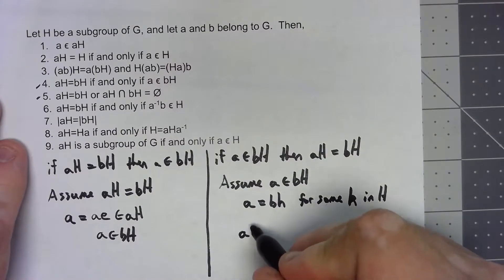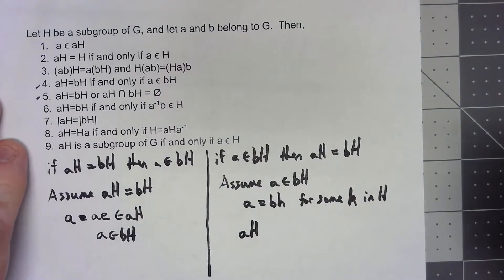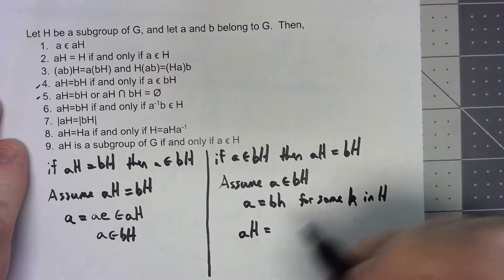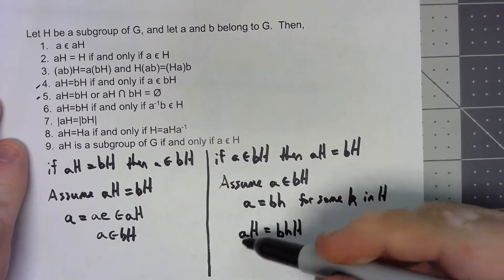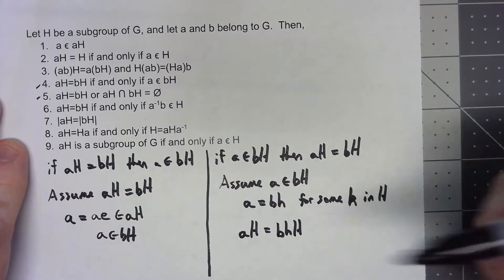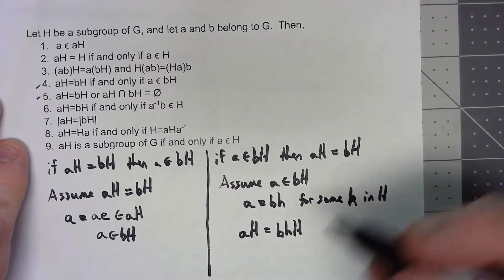So then the coset of multiplying on the left by A has to equal BH because it's the same thing. A is equal to BH, so multiplying we have to be getting the same coset.